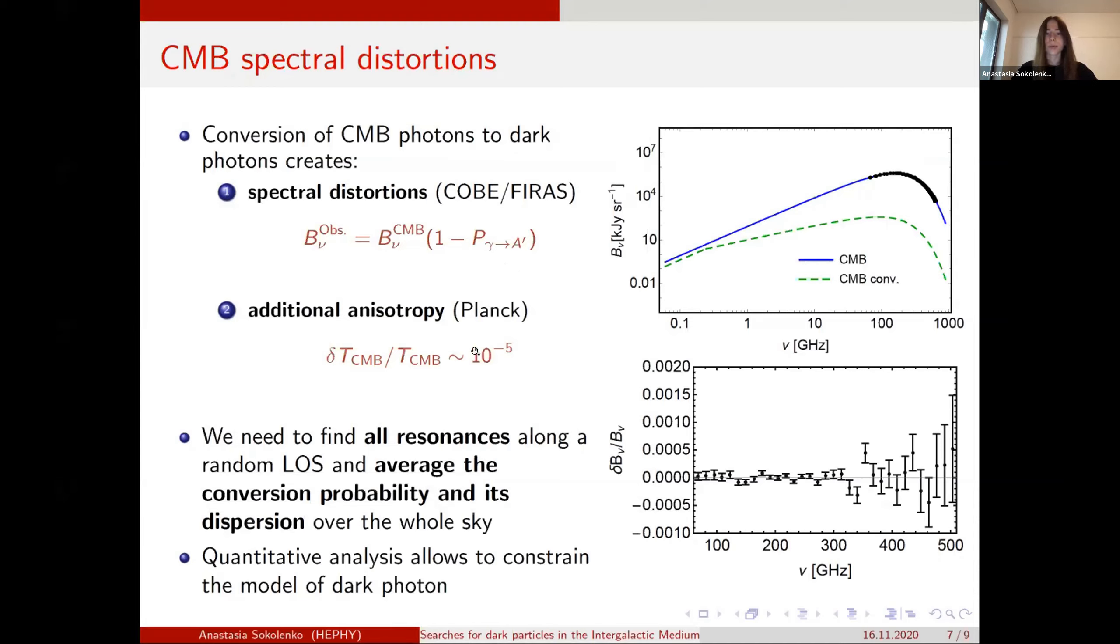And also, we know that to a very high precision, our universe is homogeneous up to 10^-5. And if we add or remove some photons, then it will add some anisotropy to the temperature fluctuation that is measured very well by Planck.